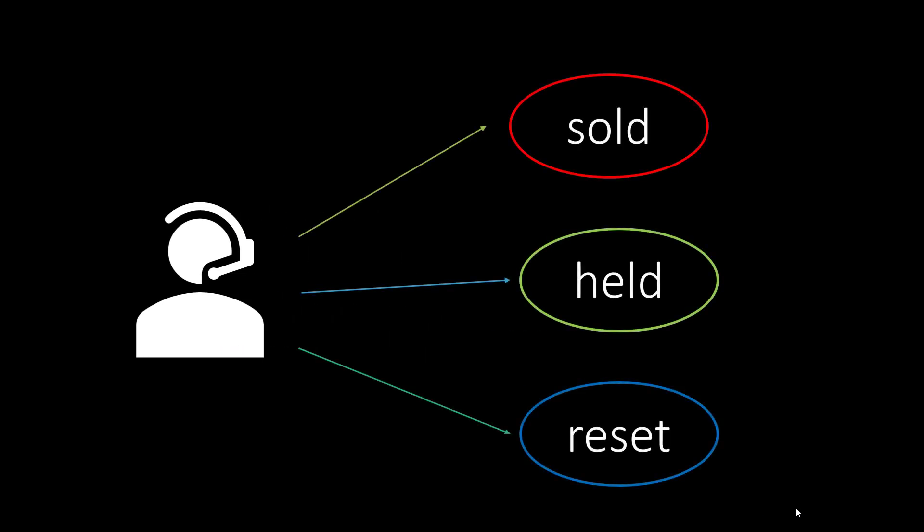Suppose there is a stock broker performing all the transactions on stock — either buying a stock, selling a stock, or holding that stock for the cooldown period mentioned. We'll have three states: one is whether I have sold a stock, second is whether I am currently holding a stock, or whether I am in a reset state, that is the cooldown period. Now let's see how all these states are going to be affected with each day.